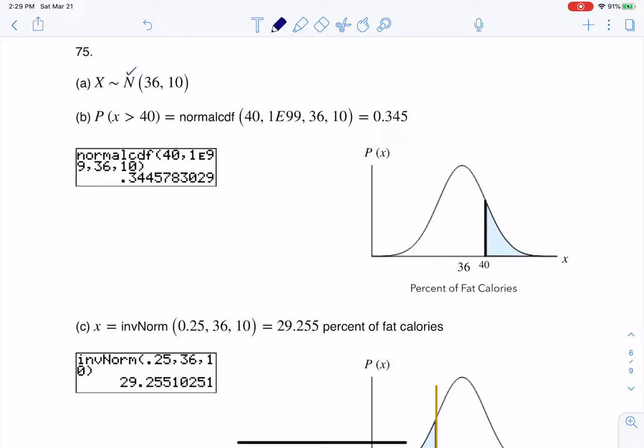We were told it was normally distributed, right? Mean is 36, standard deviation is 10. So there is my distribution. So X is this percent of fat calories.